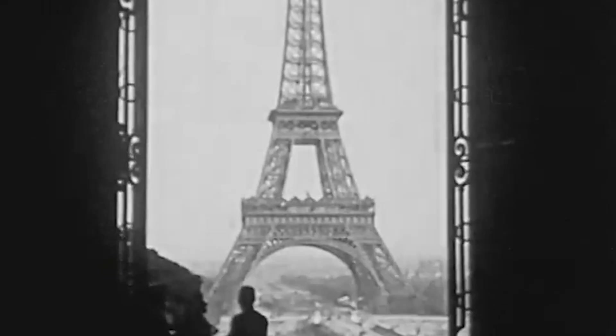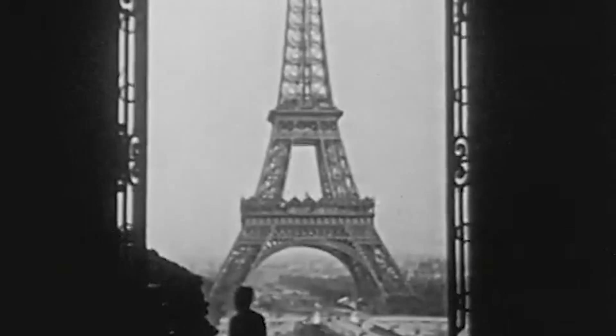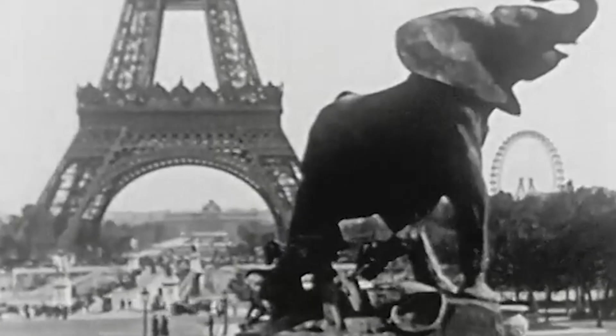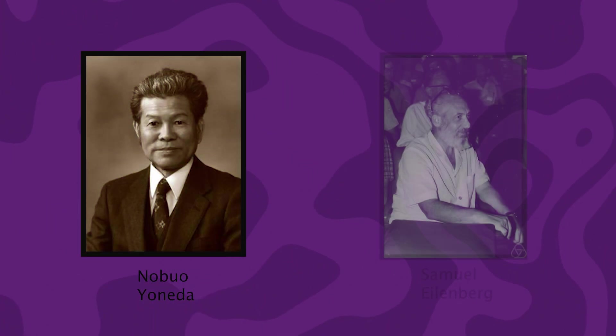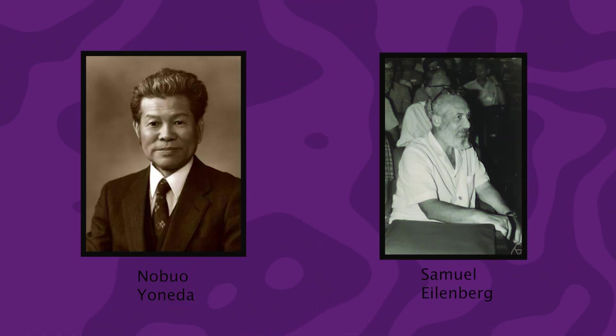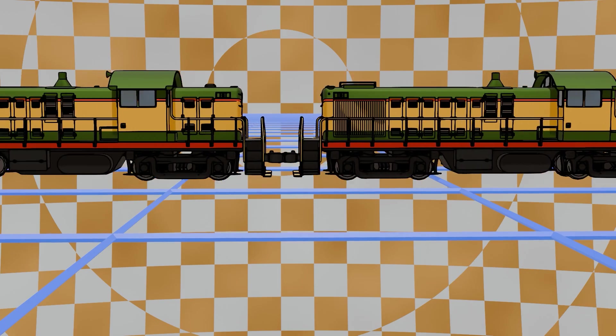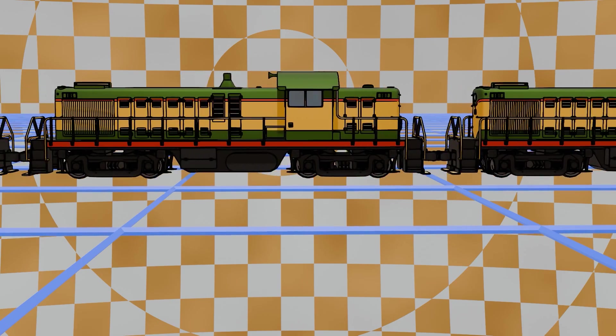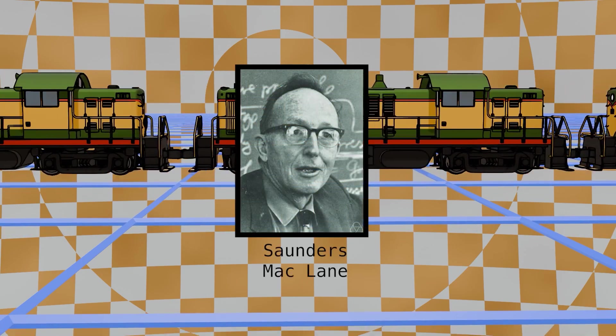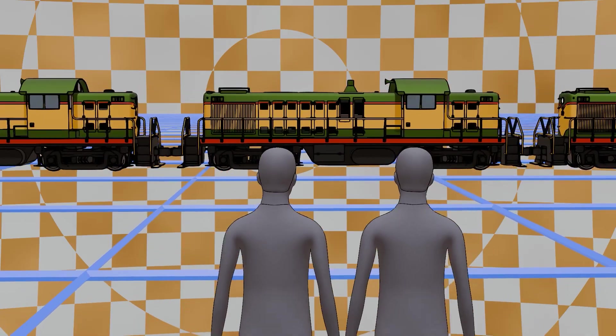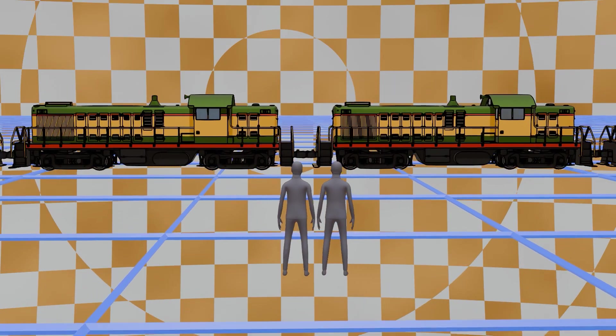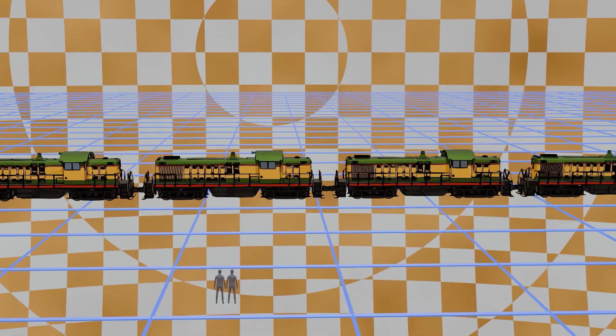The Yoneda Lemma was supposedly born in the train station Gare du Nord in Paris around the year 1954. There in France, the young Japanese mathematician Nobuo Yoneda was studying under Samuel Eilenberg, one of the two main founders of category theory. It was there in the train station that Yoneda talked with Saunders MacLane, the second founder of category theory. There in that train station, Yoneda explained his lemma to MacLane in a conversation that shaped mathematical history.